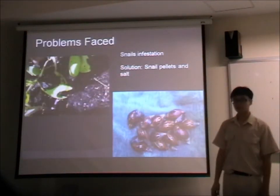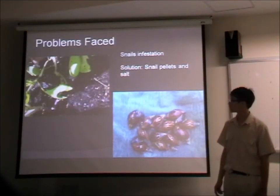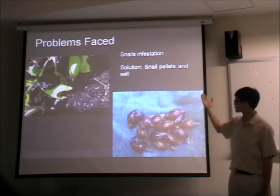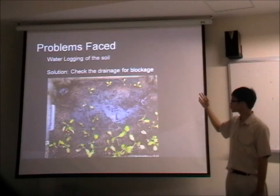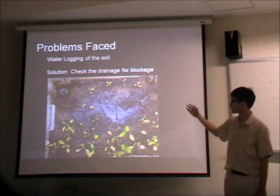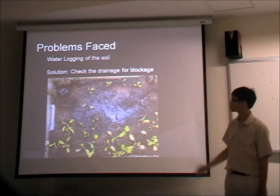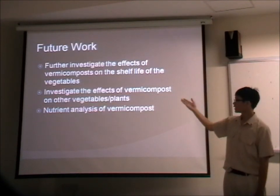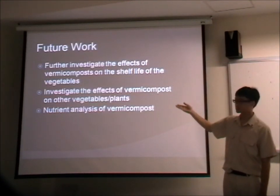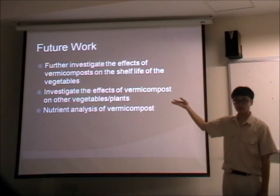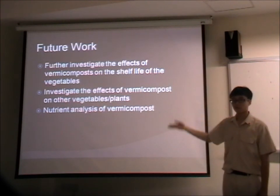We also faced several problems during the growing of vegetables, including soil contamination issues where soil had high salt content, as well as waterlogging of the soil, which was a problem caused by the artificial fertilizer and led to the death of several plants. For future work, we plan to conduct a nutrient analysis of the compost and investigate the effects on the plants further.